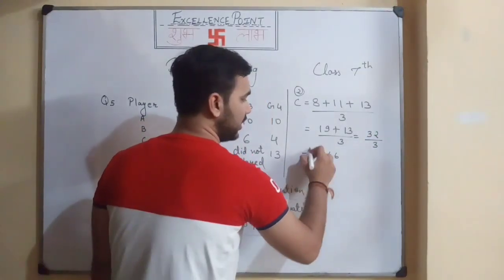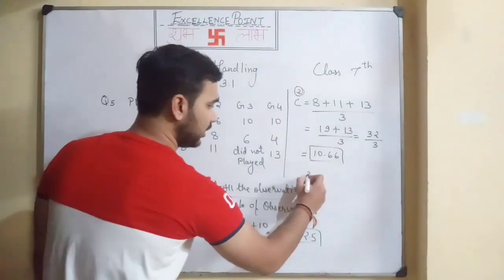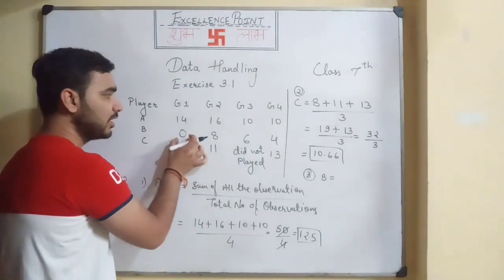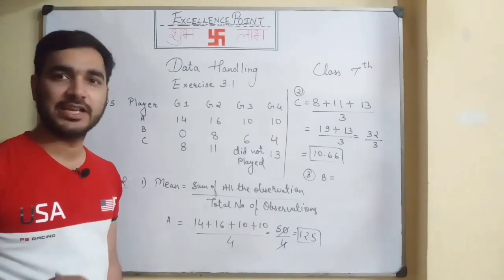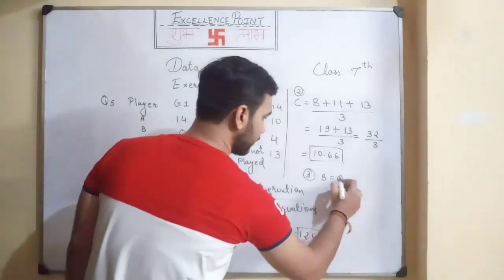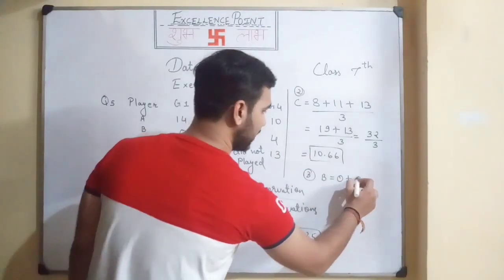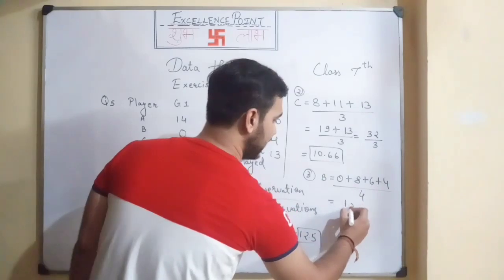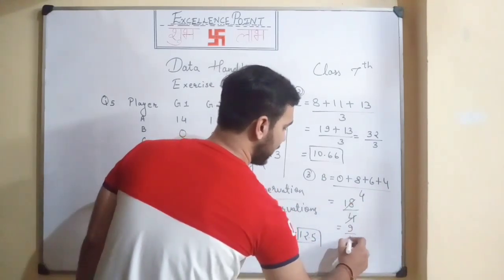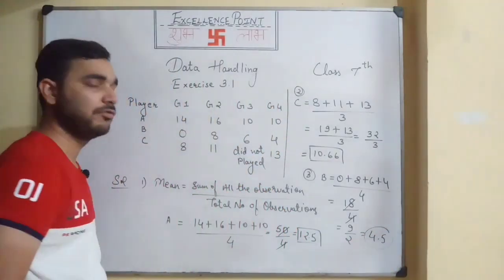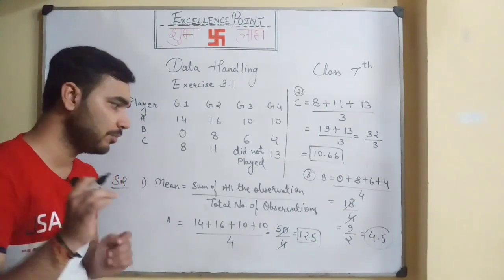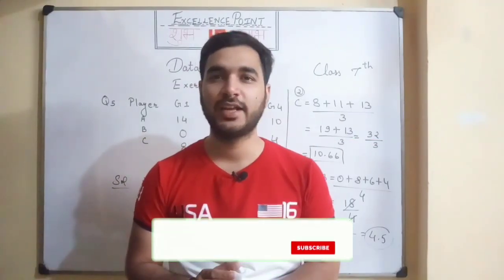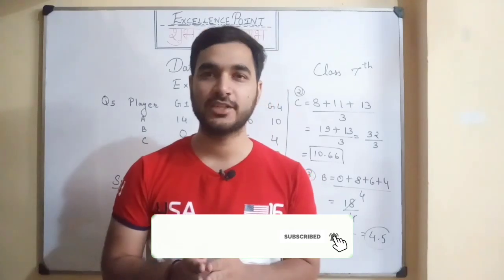For B, the score in game one is zero, but he has played the game, so we divide by 4: 0+8+6+4 divided by 4 equals 18 divided by 4 equals 4.5. The question asks who is the best performer. Since 12.5 is the highest, A is the best performer. Hope you all liked the video — like, share and subscribe for more content. Thank you and have a nice day.